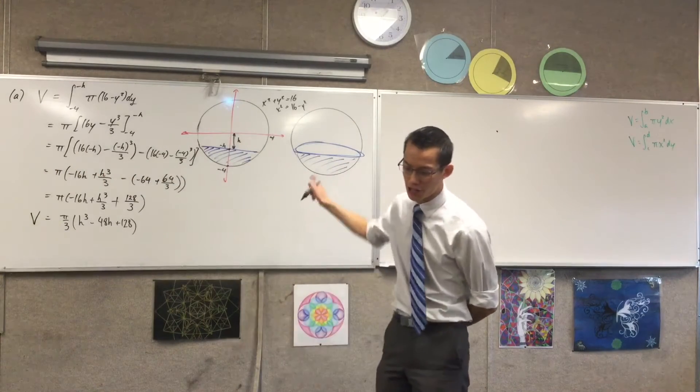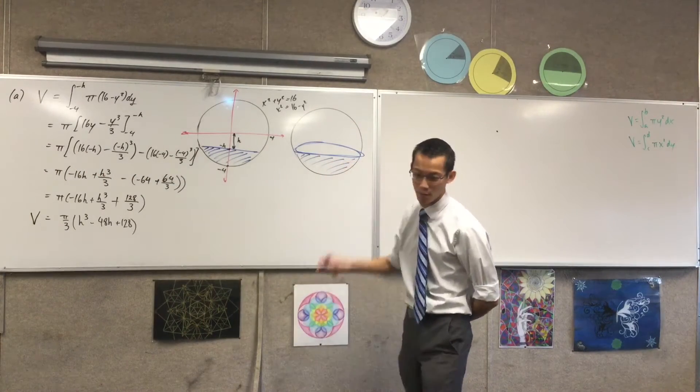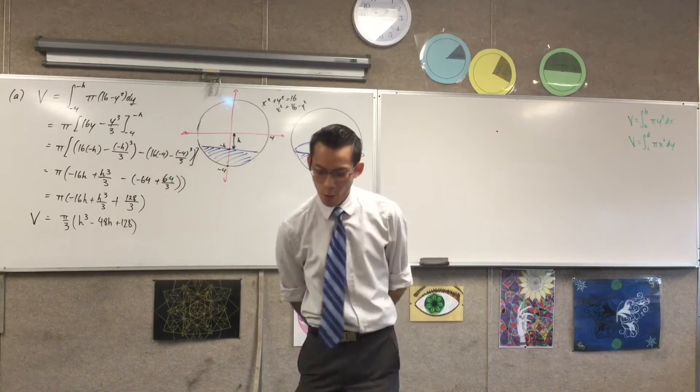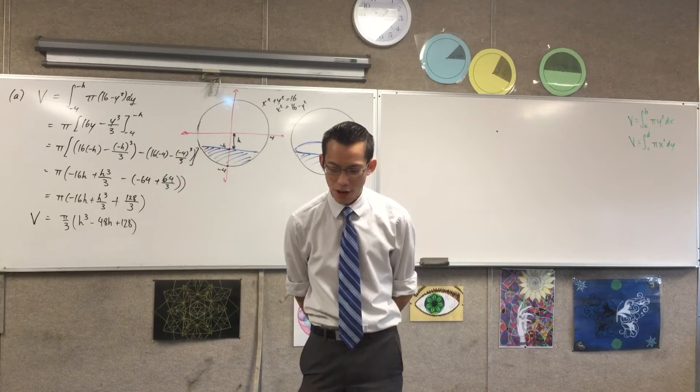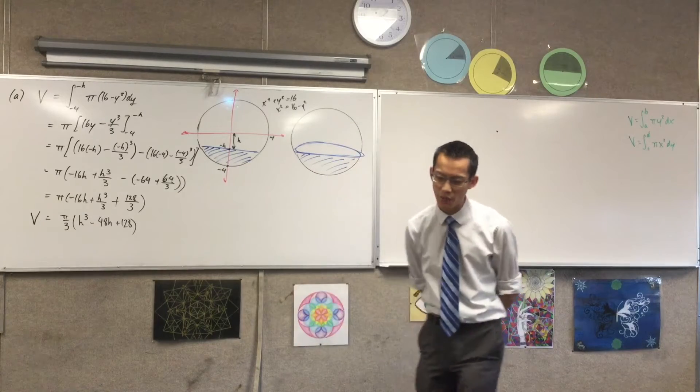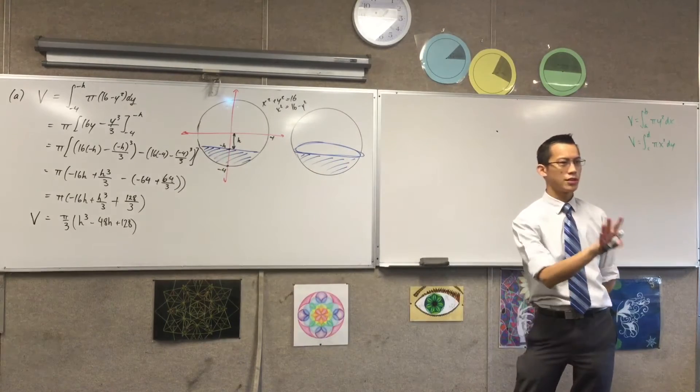So the cap represents a shallow puddle of water left after some rain, like last night. When the sun comes out, the water evaporates at a rate proportional to its surface area. Just hold on for a second, what does that mean?